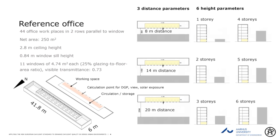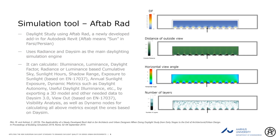As a simulation tool, we used a new tool being developed in Sweden called Aftab-RAB. Aftab means 'sun' in Persian, and the author, Majid Muri, works in Sweden. He is developing this tool and we thought we'd try it out because it seemed to make a lot of sense.